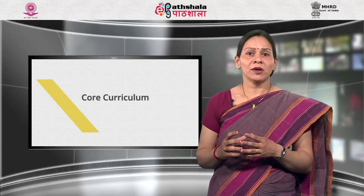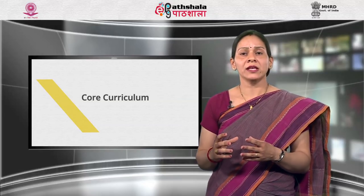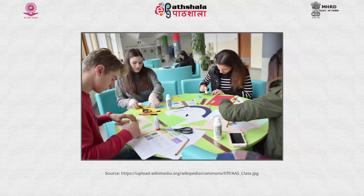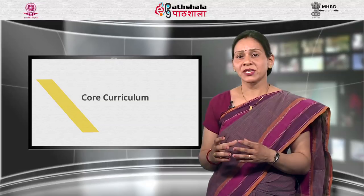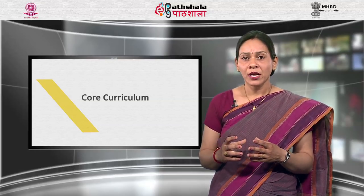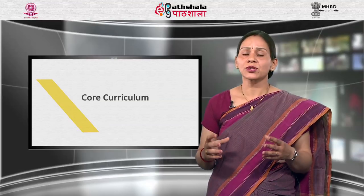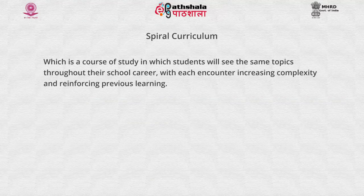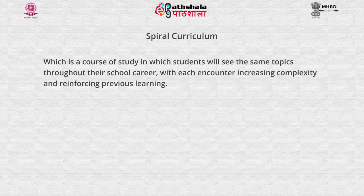Third is core curriculum, in which shortcomings of both child-centered and subject-centered curriculum have been overcome. The core curriculum is the set of common courses required of all undergraduates, considered necessary general education for students irrespective of their choice in major. In core curriculum, some subjects are essential and some are optional, so it is useful for the child as well as for society. Next is spiral curriculum, which is a course of study in which students will see the same topics throughout their school career, with each encounter increasing in complexity and reinforcing previous learning.